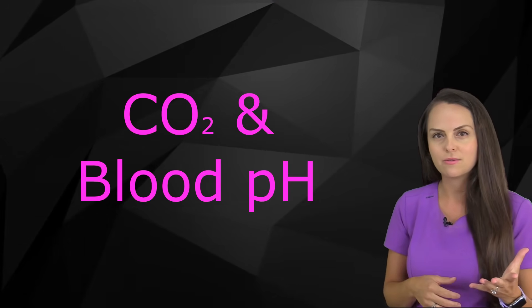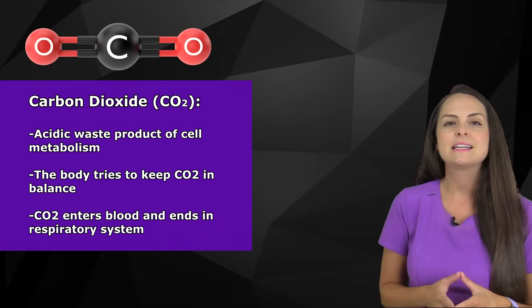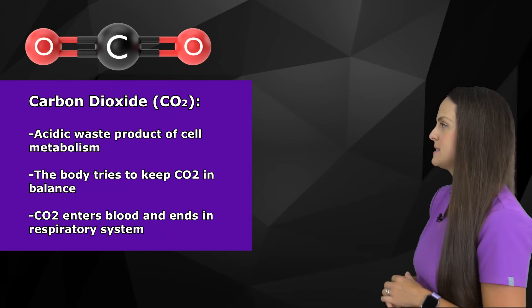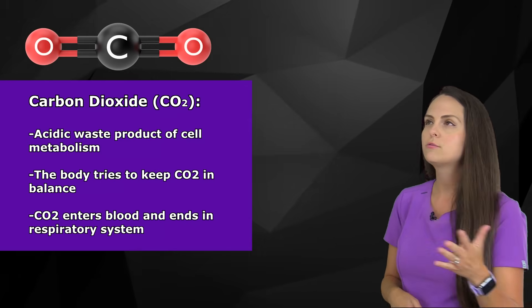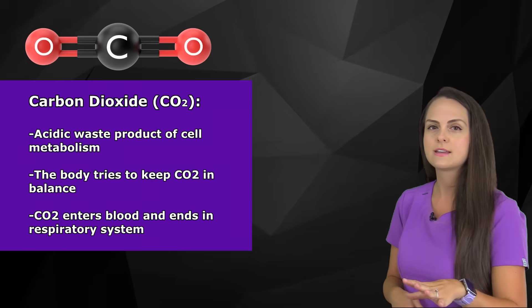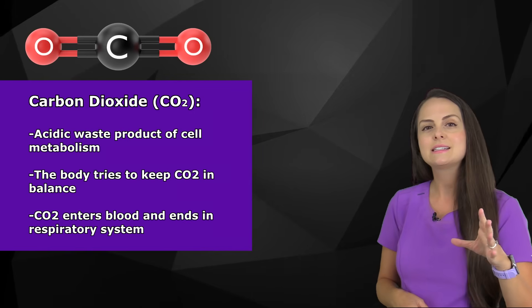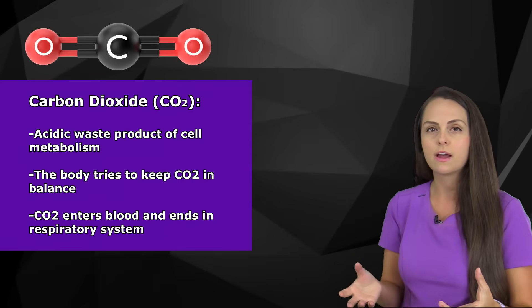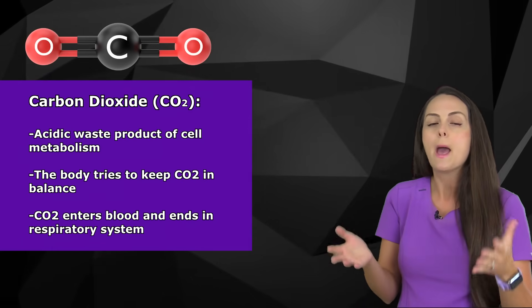To help us understand respiratory alkalosis, let's talk about CO2 and blood pH. Carbon dioxide is an acidic waste product produced from cell metabolism. We have to have cell metabolism in the body to function and have energy, but unfortunately a result of this process is the creation of carbon dioxide. Our body has to deal with this — it doesn't want too much or too little of it, as some is beneficial for maintaining our acid-base balance.